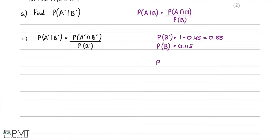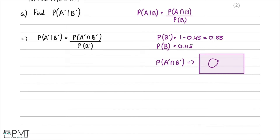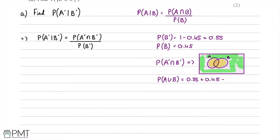Now we work out the probability of A complement intersected with B complement using a Venn diagram. The green highlighted area outside both circles is the complement of A union B. First we find P(A∪B) = 0.35 + 0.45 − 0.13 = 0.67. So P(A'∩B') = 1 − 0.67 = 0.33.